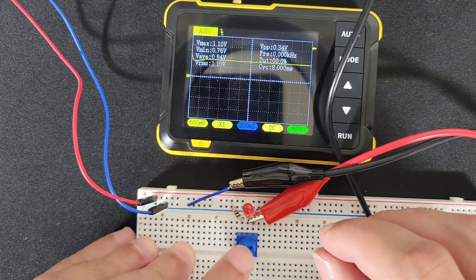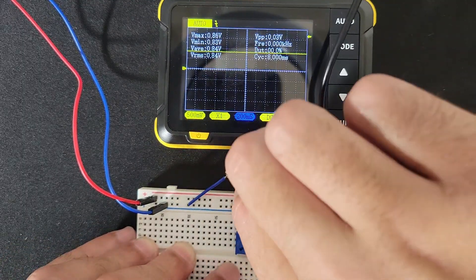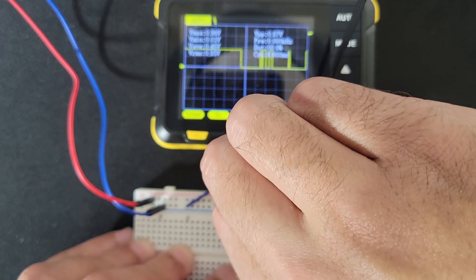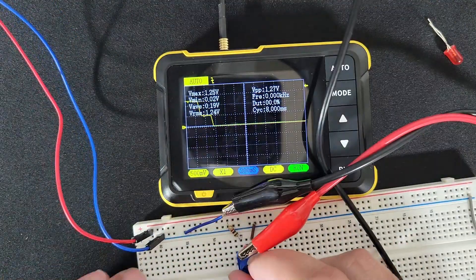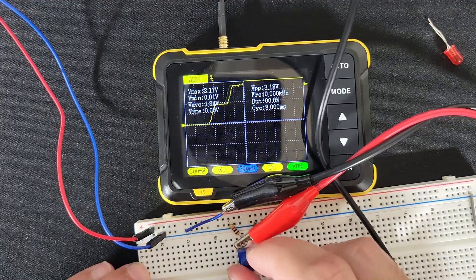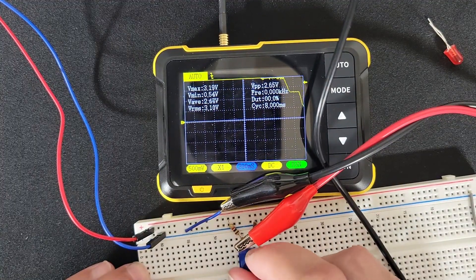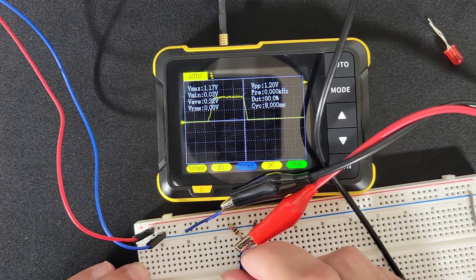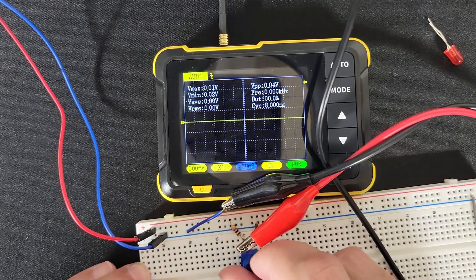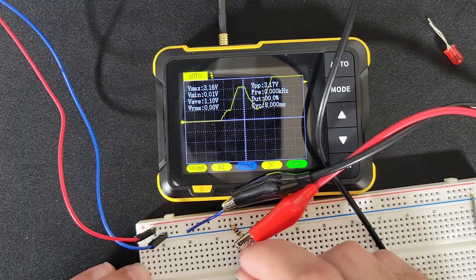And if we remove the LED, then I assume we'll have the full three volt range, perhaps. Yeah, so now we have the full three volts available. So there are 3.17 volts, and we can go down to zero.